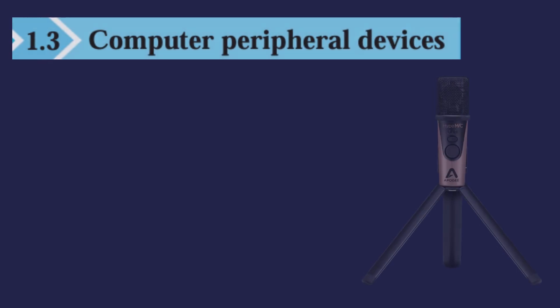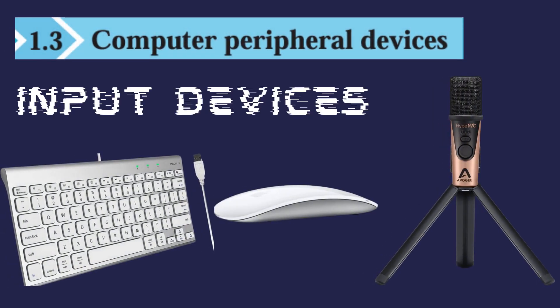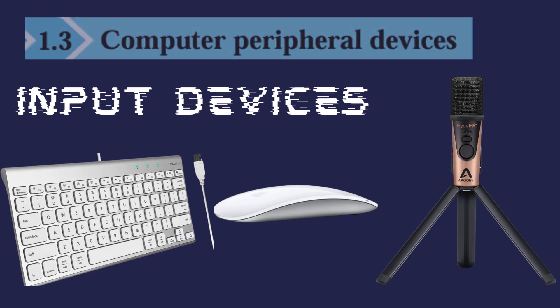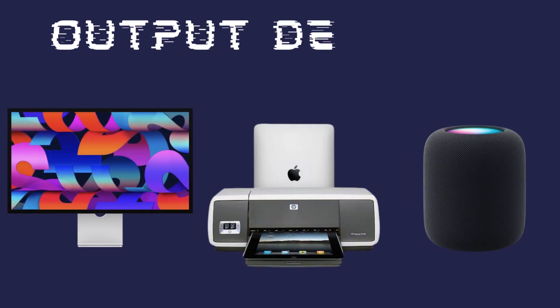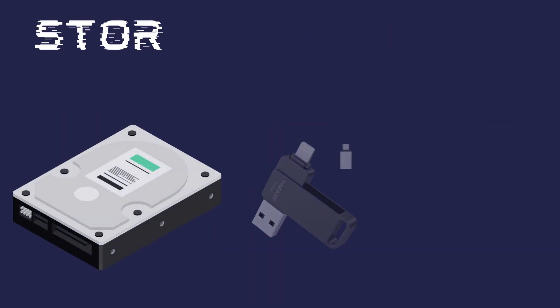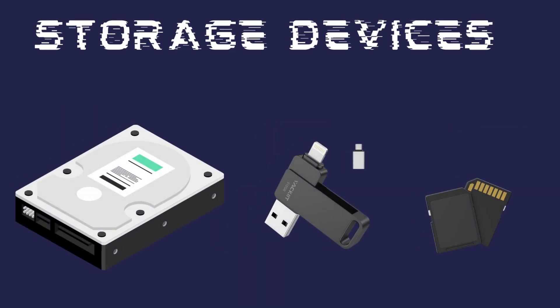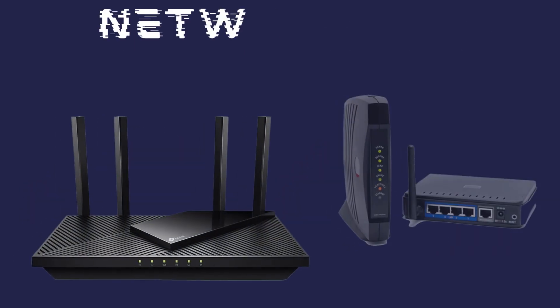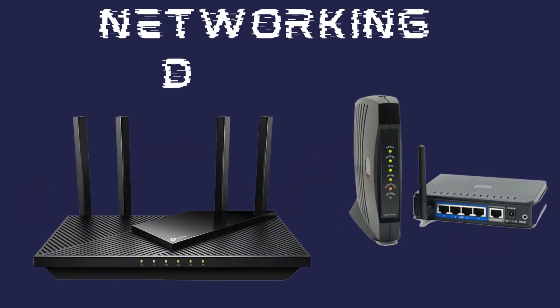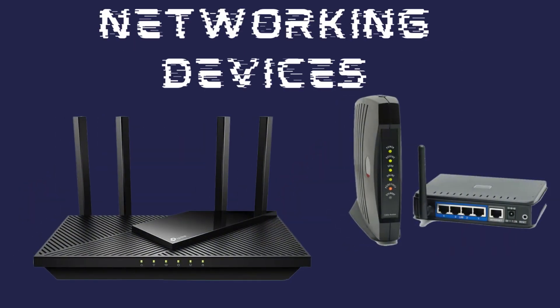Computers also require additional devices called peripherals. These include input devices such as keyboards, mice, and microphones, used to enter data. Output devices like monitors, printers, and speakers display results. Storage devices — hard drives, USB flash drives, and memory cards — are used to store data. Networking devices such as routers and modems help connect computers to the internet.